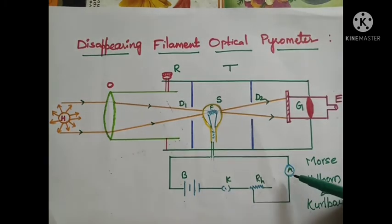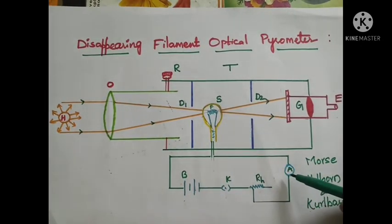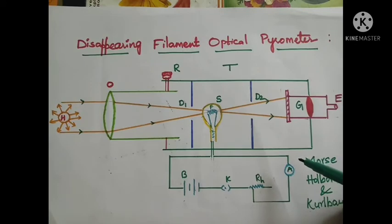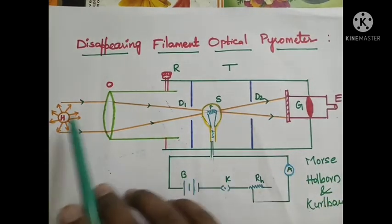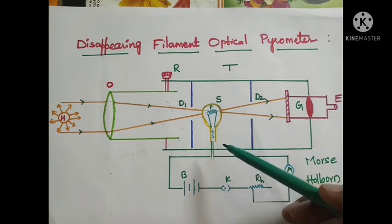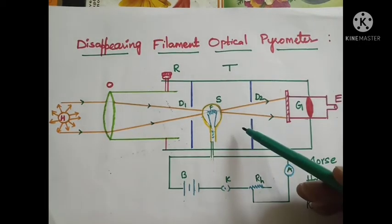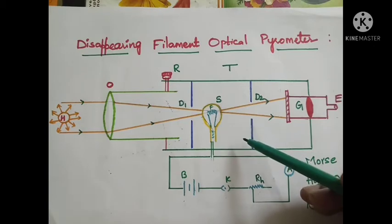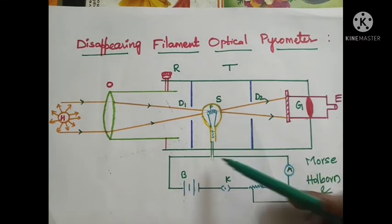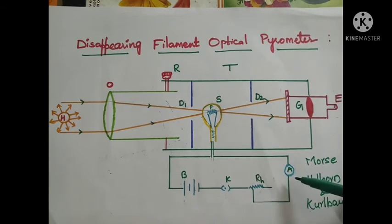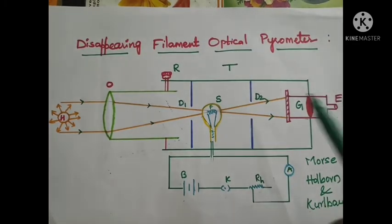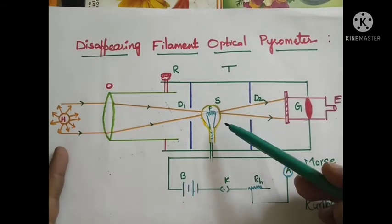The filament just disappears against the background, and the current in the filament is recorded with the help of the ammeter. Since both the filament and image are equally bright, they must be emitting equal amounts of energy per unit second, and hence they must be at the same temperature. When both are equally bright, the temperature measured by the ammeter is equal to the temperature of the hot body.